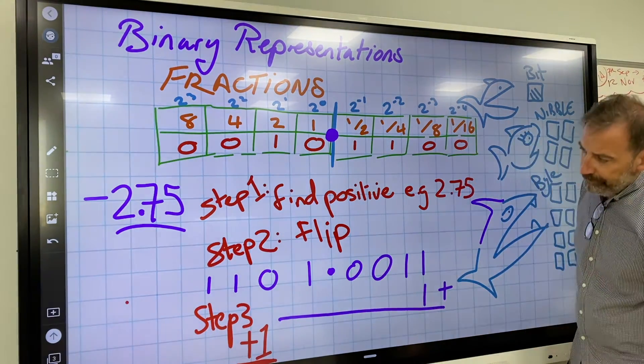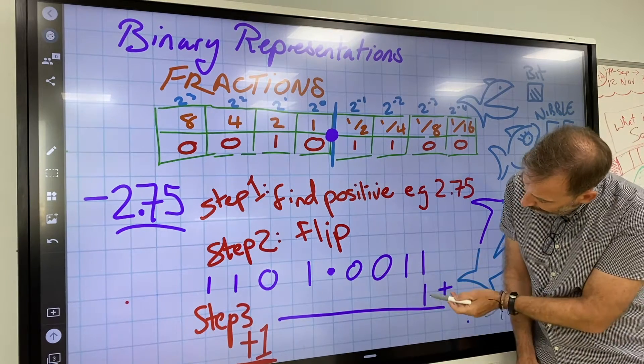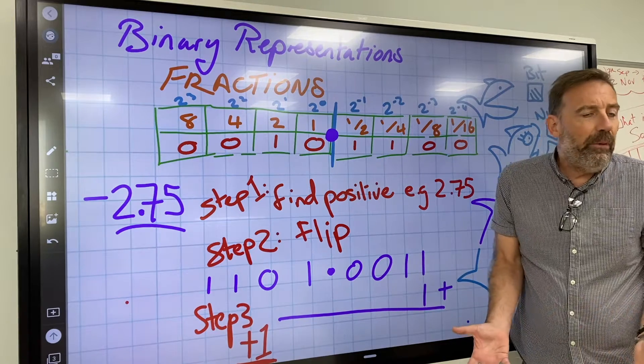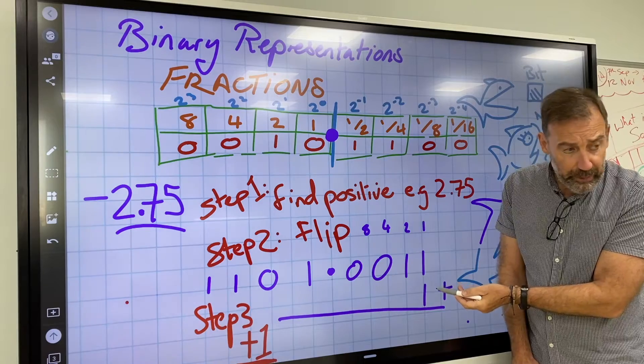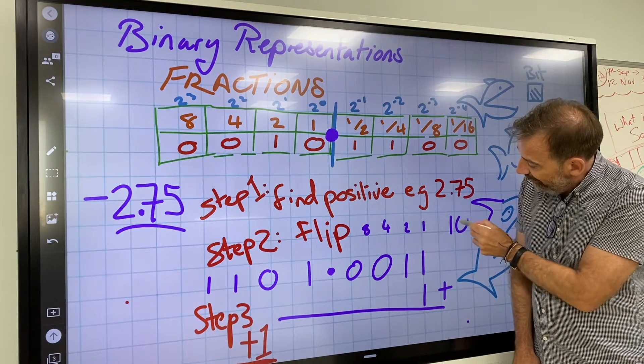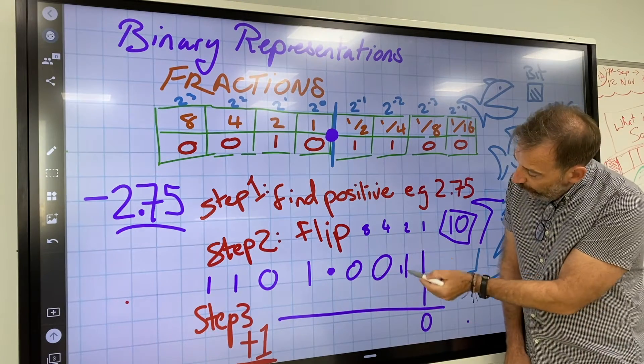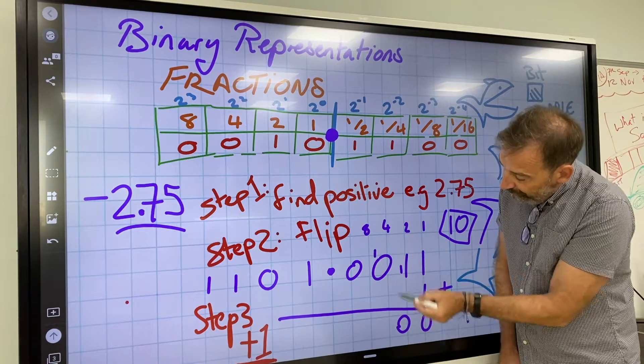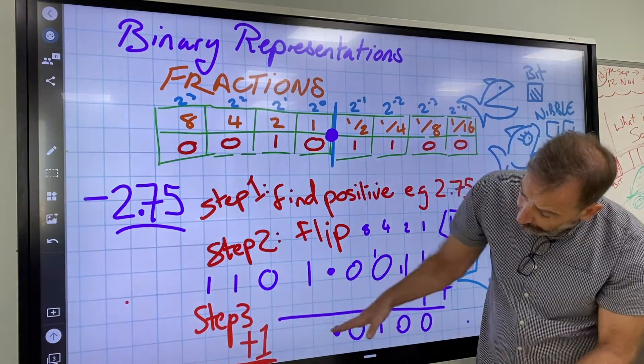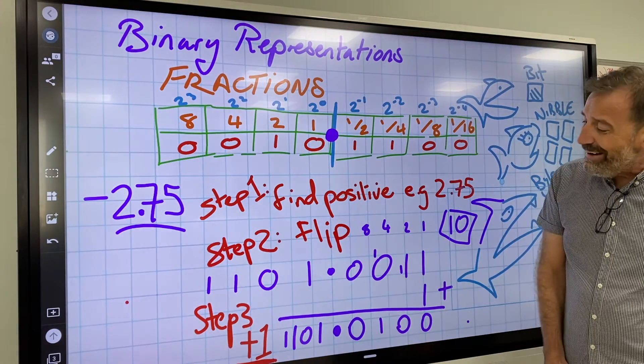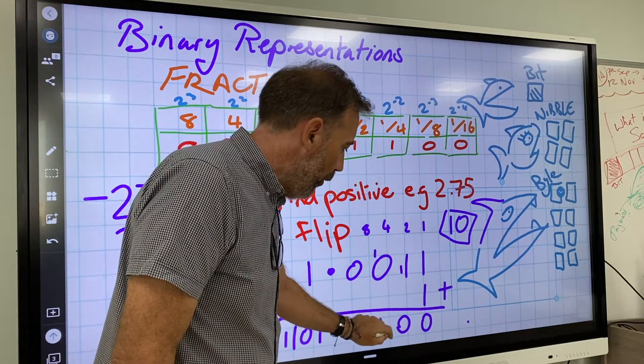1 plus 1 in normal maths is 2. If we think about 1, 2, 4, 8, we're doing nibbles. 1 plus 1 is 2, so 2 in binary is 10. That's 0 and carry the 1. 1 plus 1 is 2, 0, carry the 1. 1 plus 0 is 1. 0 plus nothing is 0. Put the punto back in, and that remains the same.